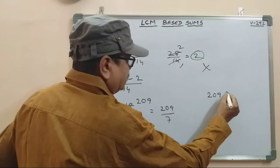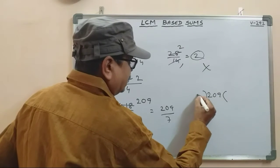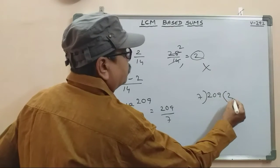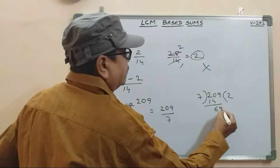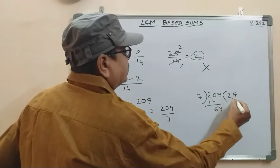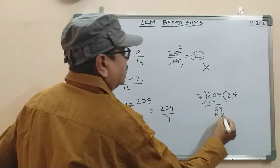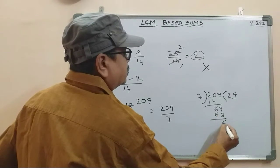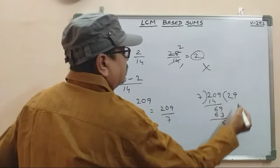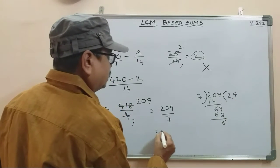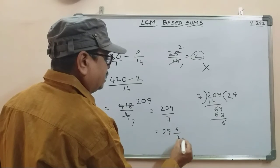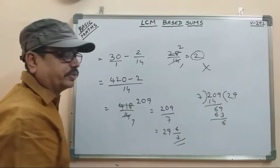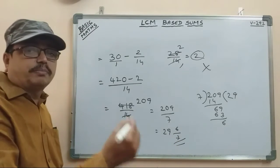209 divided by 7: 7 into 2 is 14, remainder 69. 7 into 9 is 63, remainder 6. So we get 29 remainder 6, giving 29 and 6 by 7.